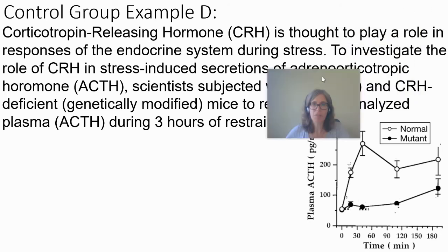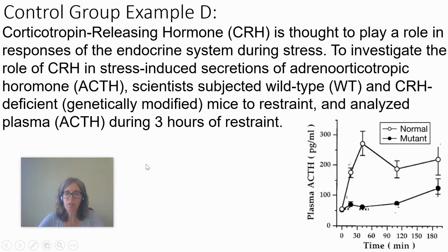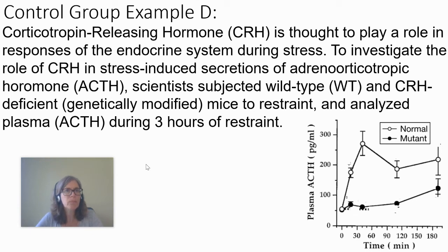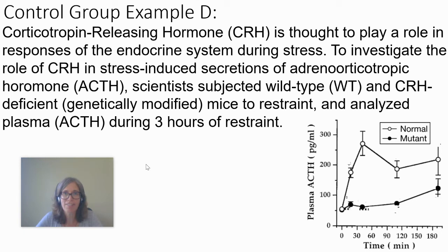Here's an example that's going to be a little more complex — more like something you might see on an AP test. Again, this is not super common; I think I've seen it once or twice on an AP test. Corticotropin releasing hormone — we're never going to do a full unit on that, so here's the big name. CRH is a little shorter. This hormone is thought to play a role in responses of the endocrine system during stress.